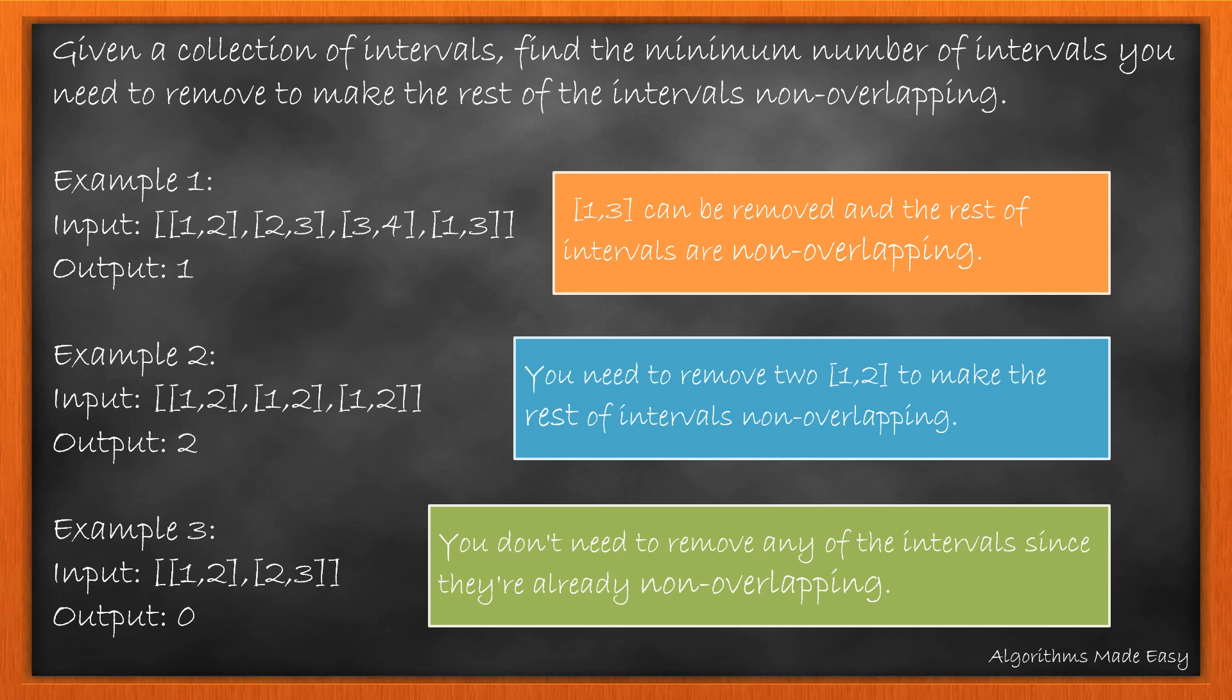Given a collection of intervals, find the minimum number of intervals you need to remove to make the rest of the intervals non-overlapping. For example 1, removing makes the rest of the interval non-overlapping. For example 2, we need to remove 2 intervals to make the rest of the interval non-overlapping.